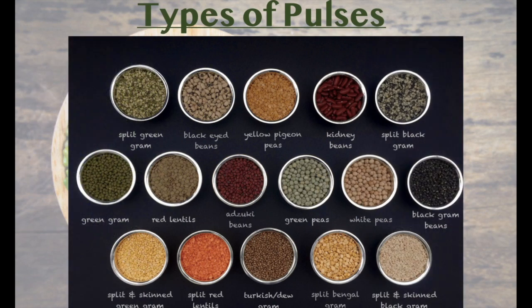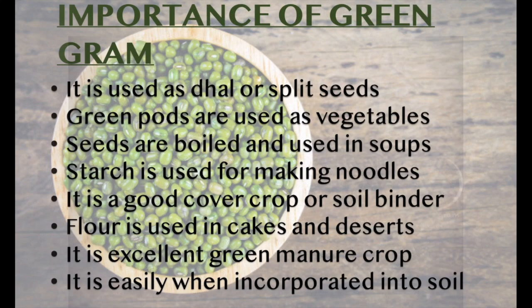Types of pulses. Importance of Green Gram: It is used as dal or split seeds. Green pods are used as vegetables. Seeds are boiled and used in soups. Starch is used for making noodles. It is used as a good cover crop. Flour is used in cakes and desserts. It is an excellent green manure crop.